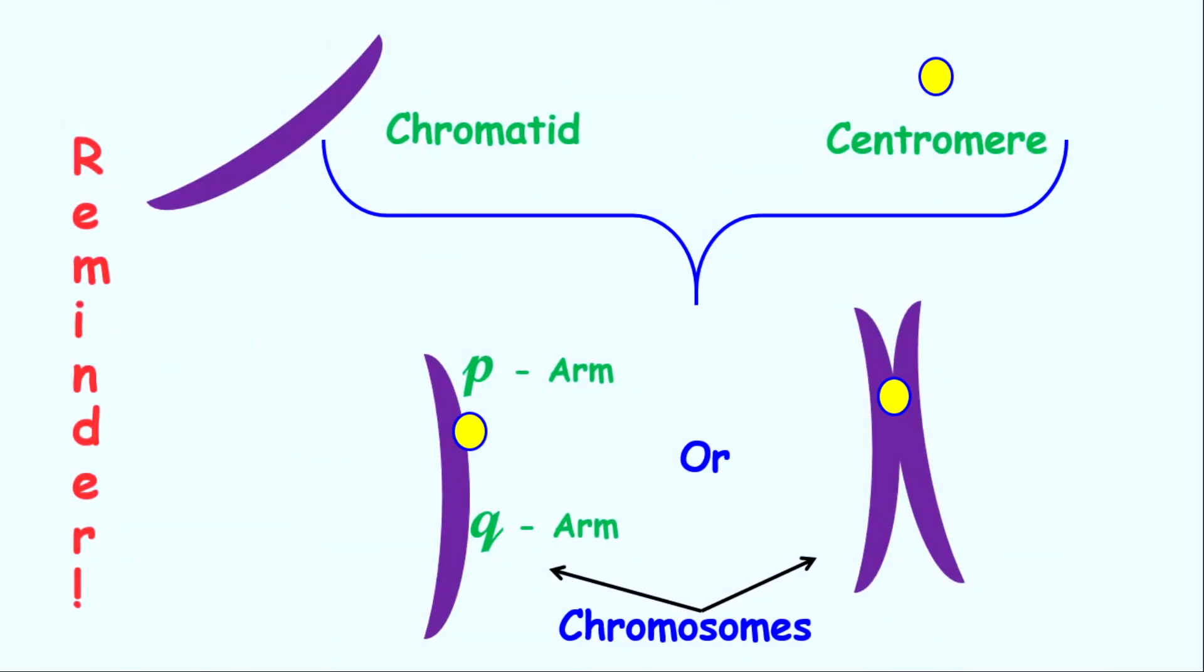Firstly, let me remind you that a chromatid will be just one part of a chromosome. So this will be a chromatid. The glue that holds chromatids together is known as centromere.